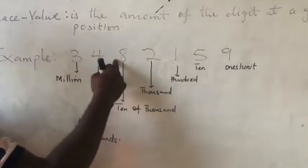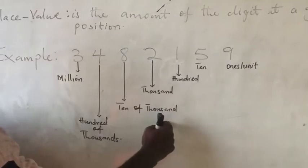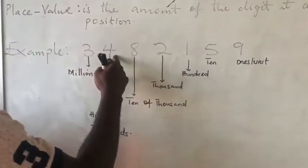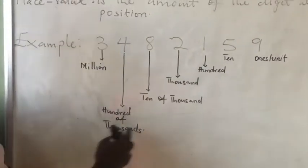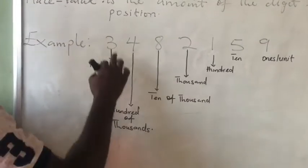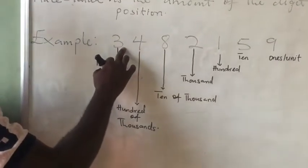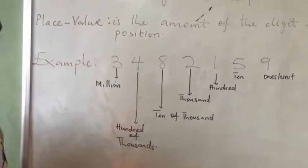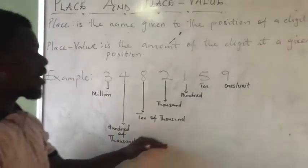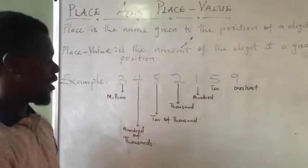After the 2 is 8, which is ten of thousands. Then the next one is 4, hundreds of thousands. Then the last one on your left is what? Millions. Good. So these are the names given to each of the digits over here.